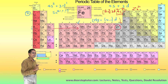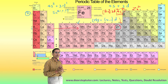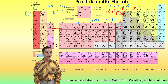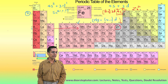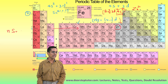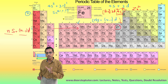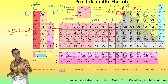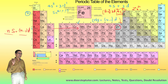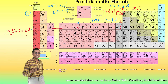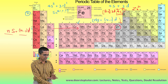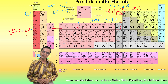The same goes for cadmium and mercury. For all other D-block elements, it is the combination of the NS plus the (N-1)D electrons that are the valence electrons. But for zinc, cadmium, and mercury, it is only the 4S, 5S, and 6S electrons respectively that are the valence electrons.